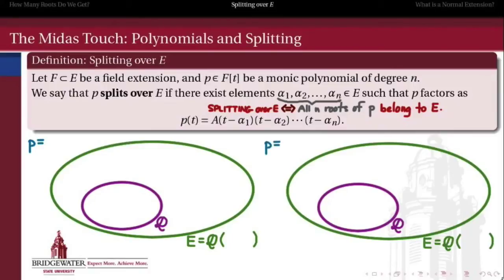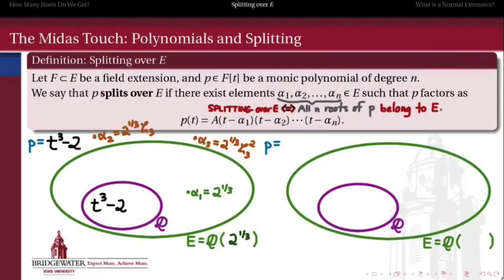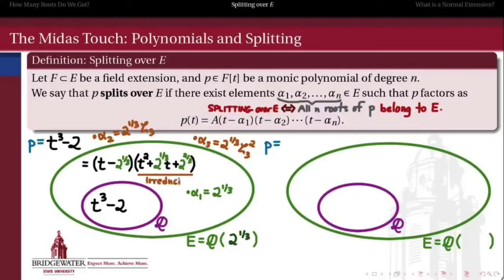Looking back at our previous example, where P was t³ - 2 and we extended to include the real cube root of 2, the other two roots of that polynomial do not belong to the extended field. Therefore t³ - 2, which was irreducible over the rationals, when we extend to include 2^(1/3) in our coefficient field, factors as (t - α₁) times some other polynomial Q. But that other polynomial, t² + 2^(1/3)·t + 2^(2/3) — just using a difference of cubes factorization — is irreducible inside of E. In other words, we can't factor this any further. Therefore, this polynomial does not split completely over Q(2^(1/3)).